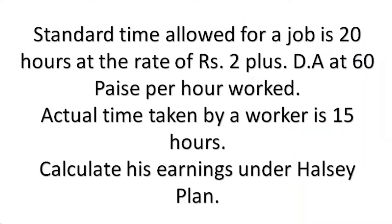Standard time allowed for a job is 20 hours, so standard time is 20 hours, at the rate of rupees 2. So the standard rate is rupees 2, plus DA at 60 paisa per hour worked. The actual time taken by a worker is 15 hours. Calculate his earnings under the Halsey safe plan.